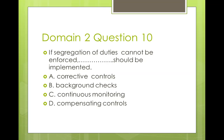Question ten: if segregation of duties cannot be enforced, what should be implemented? A) Corrective controls, B) background checks, C) continuous monitoring, D) compensating controls. The answer is D. Once you don't have segregation of duties — maybe in a small organization — you need to have compensating controls to make up for that.